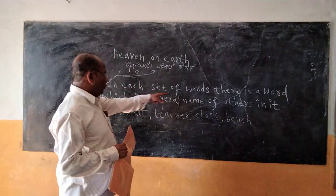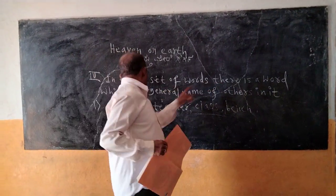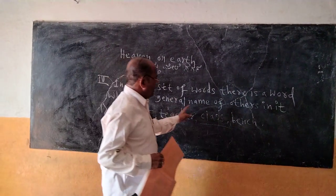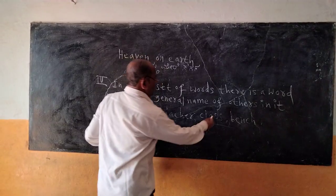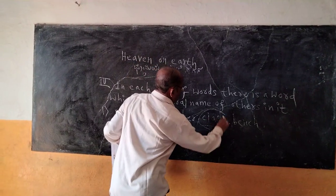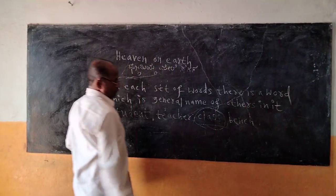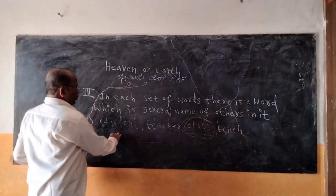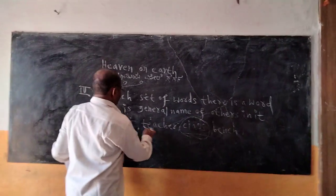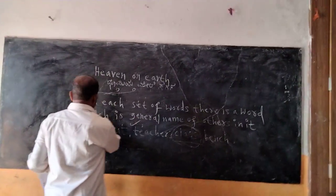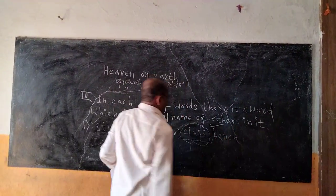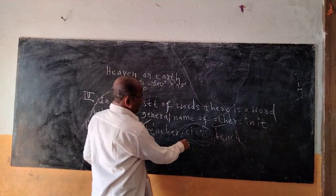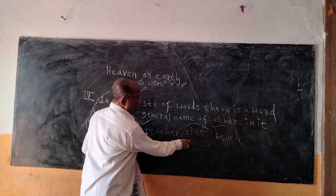In each set of words, there is a word which is a general name of the others in it. For example, student, teacher — then bench and table are included. The general word is 'class.'